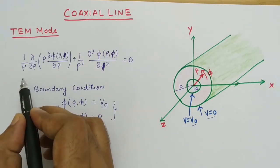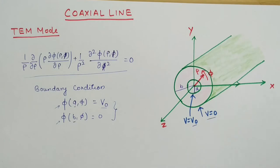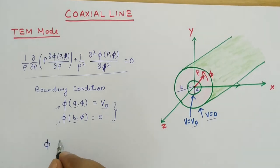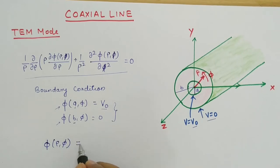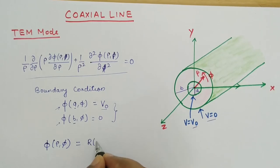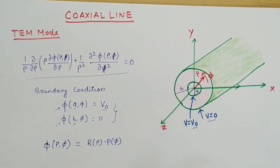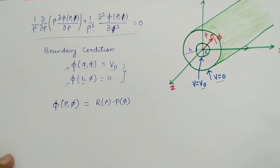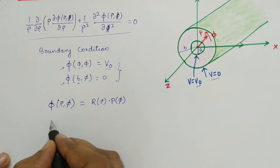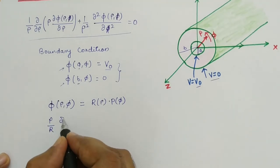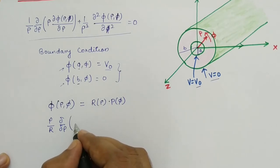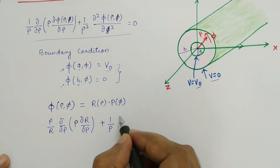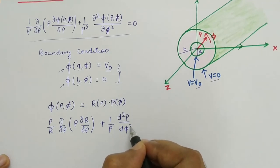The Laplace equation in cylindrical coordinate system is given, and now we write its solution. For the solution, we assume that phi(rho, phi), which is the potential, is a function of rho and phi, where R is a function of rho and P is a function of phi. Applying this into the Laplace equation we get: (rho/R) * (del/del_rho)(rho * del_R/del_rho) + (1/P) * (d²P/dφ²) = 0.